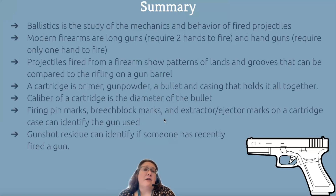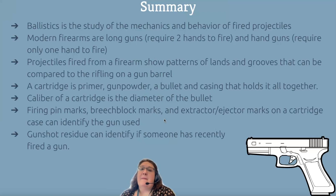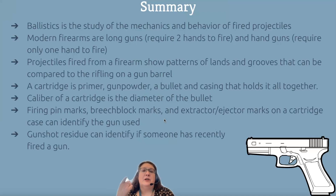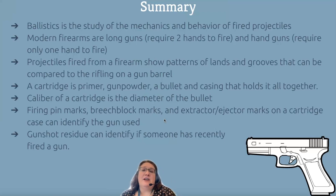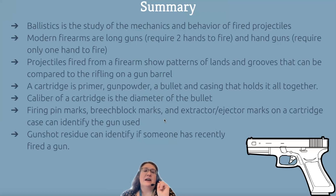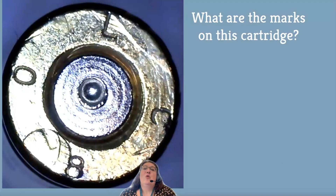As a summary: ballistics is the study of the mechanics and behavior of fired projectiles. Modern firearms include long guns that require two hands, handguns that require only one hand, and shotguns which are a kind of long gun. Projectiles fired from a firearm show patterns called lands and grooves that can be compared to the rifling of the barrel. A cartridge is made up of a primer, gunpowder, bullet, and casing. The caliber of a cartridge is the diameter at the top where the bullet is. Firing pin marks, breech block marks, and extractor marks would all be found on the cartridge casing and help match the casing to a weapon. Gunshot residue can identify someone who has recently fired a gun.